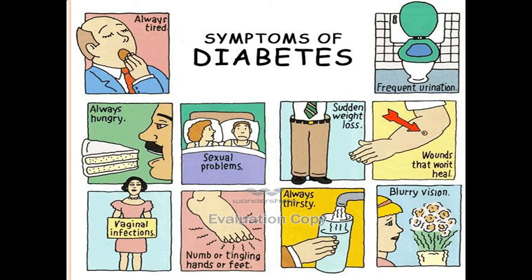So what are the symptoms of diabetes? As we have seen, there is decreased energy production so you will always feel tired and always feel hungry. You are also losing sugar from the blood into the urine, and with it there is a lot of water, so you get frequent urination and because you are losing water you are always feeling thirsty. You might also have sudden weight loss. Some patients may present with complications of diabetes which could be sexual problems, vaginal infections in females, numbness or tingling of the hands or feet, blurry vision, or wounds that won't heal.